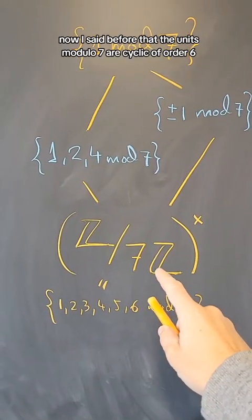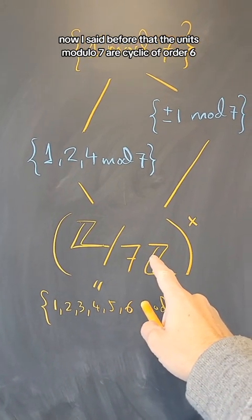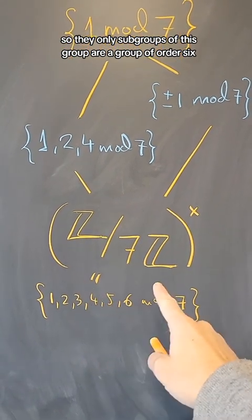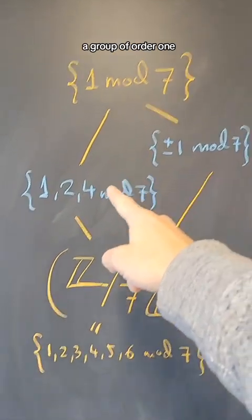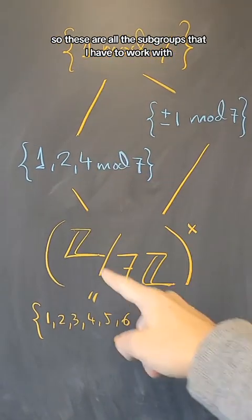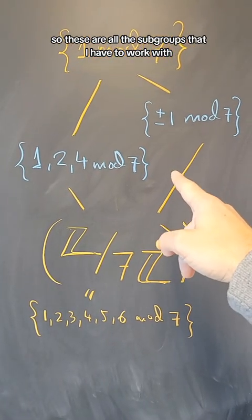Now, I said before that the units modulo 7 are cyclic of order 6. So the only subgroups of this group are groups of order 6, 1, 3, and 2. So these are all the subgroups that I have to work with.